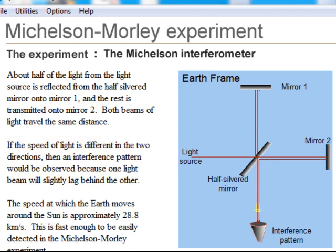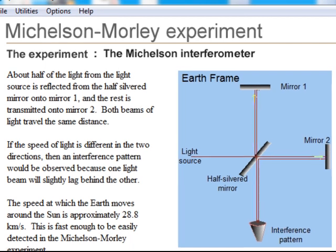If, however, light travels at the same speed in all directions, no interference would be observed. In fact, no interference was observed, so no ether frame exists.